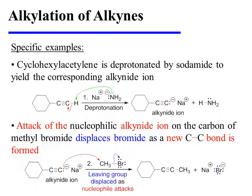In this specific example, cyclohexylacetylene is deprotonated by sodium amide to yield the corresponding alkynide ion. In a separate second step, the alkynide ion is treated with methyl bromide, and attack of the alkynide ion on the electrophilic carbon displaces bromide to yield a new carbon-carbon bond.